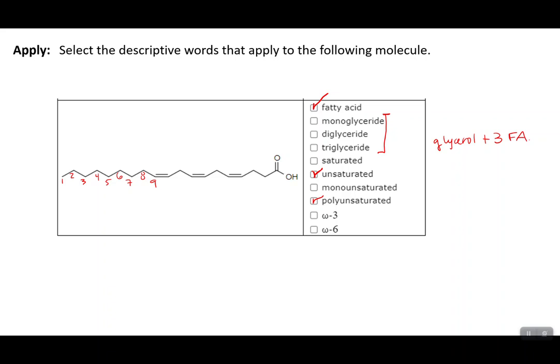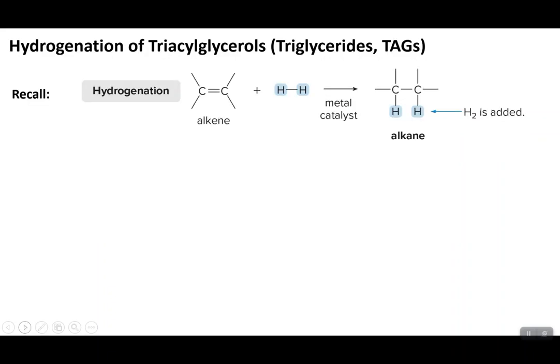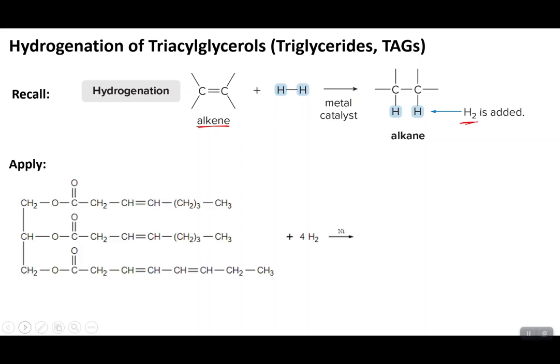The last topic in this video is hydrogenation, a reaction we have already seen. Triglycerides can be hydrogenated. Recall that in hydrogenation, we start with an alkene containing carbon-carbon double bonds, add H2, and convert that to an alkane by adding H2 across the double bond. With triglycerides, we just covered that they can contain fatty acids with double bonds — one, two, or none at all. In this example, we are going to hydrogenate a triglyceride by adding enough hydrogen to remove all of the double bonds.